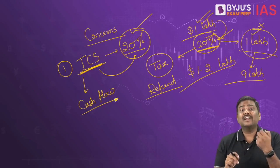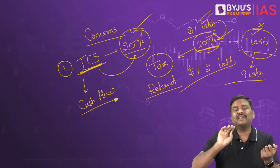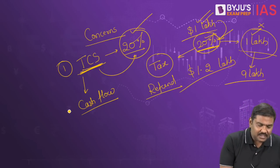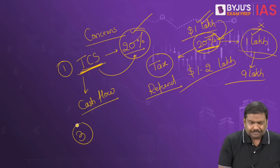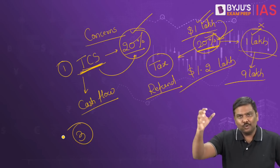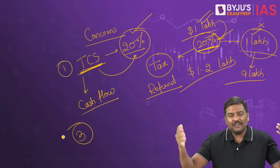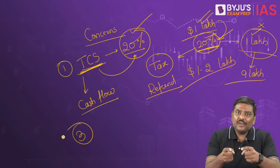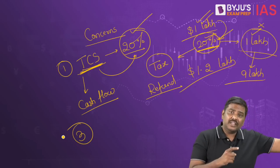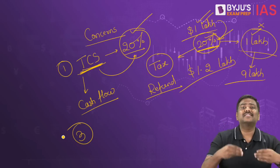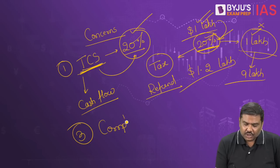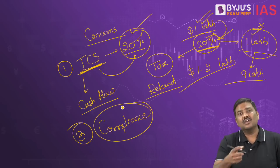Second concern: demand for credit card usage for international travel is expected to be negatively affected. Third very important concern is the compliance issue. Credit card companies will now have to collect data from all travelers, create systems to collect the tax, and submit this tax to the Government of India — which will significantly increase the compliance burden for all stakeholders in the market.